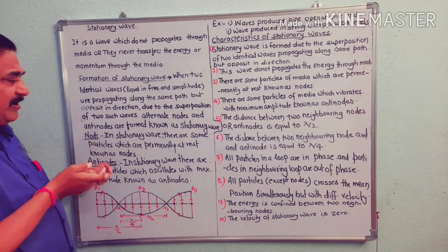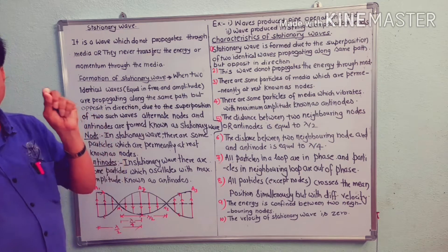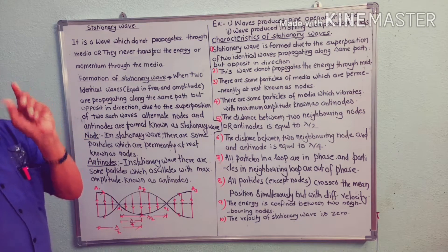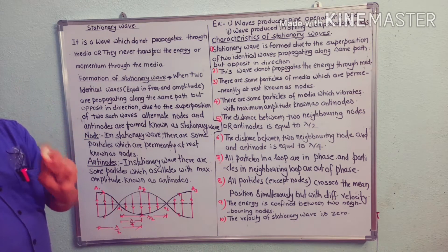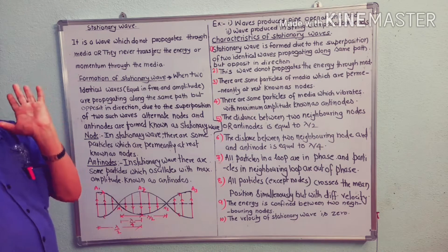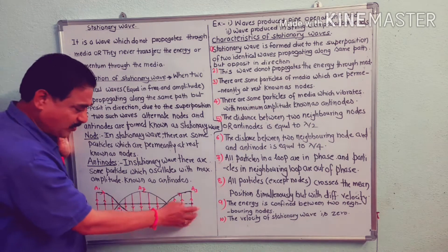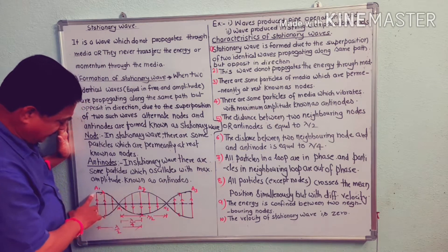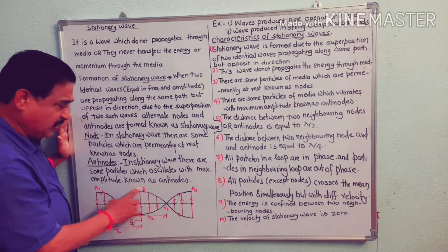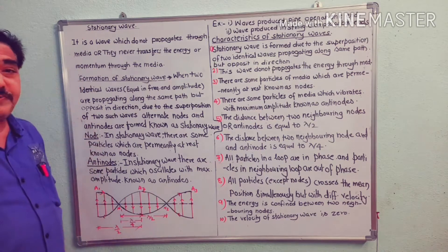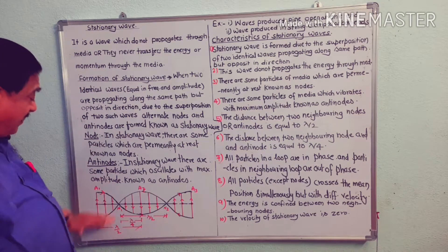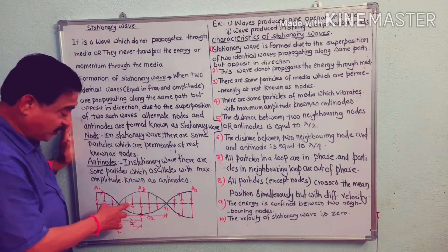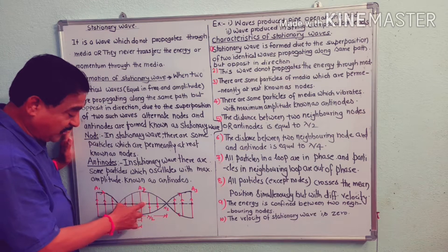In a stationary wave, there are some particles which oscillate with maximum amplitude. These points are called antinodes. In a stationary wave, these particles are at positions A1, A2, and A3 — the particles that vibrate with maximum amplitude.